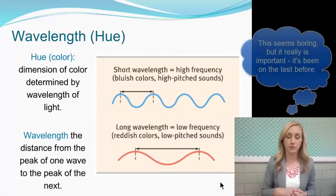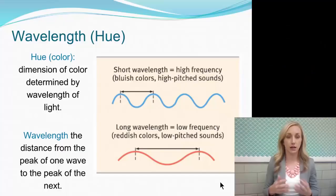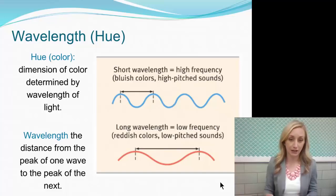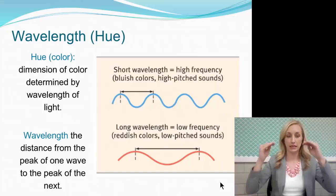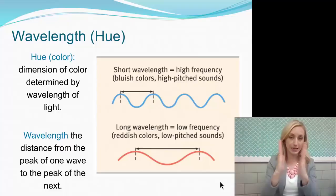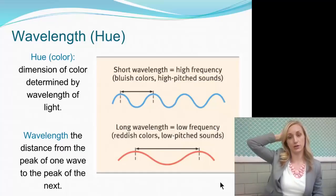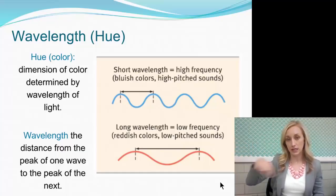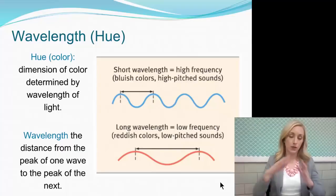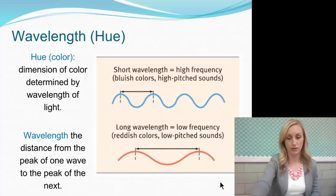We have wavelengths for both light waves and sound waves. Hue allows you to see color — it's the dimension of color determined by the wavelength of light, which is the distance from the peak of one wave to the peak of the next. Short wavelengths or high frequency are more bluish colors, and also correspond to high-pitched sounds. The longer the wavelength, which is a low frequency, the more red the color and the more low-pitched the sound.